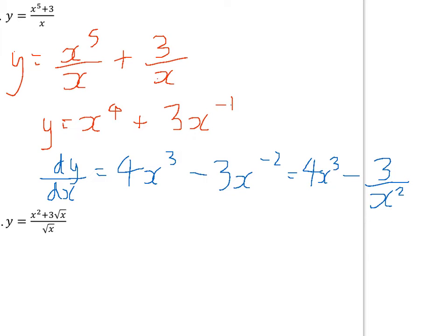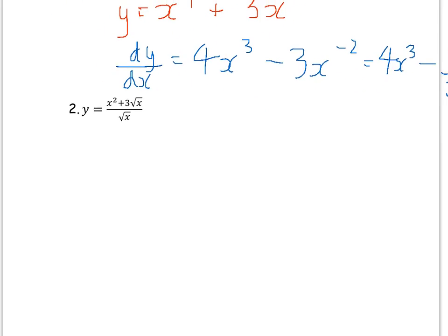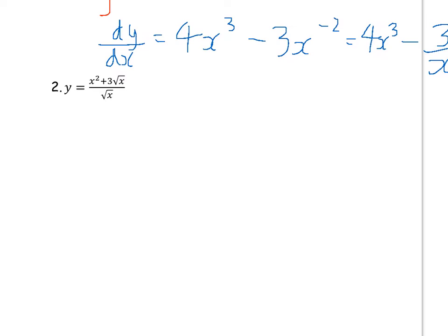The final answer is four x cubed minus three over x squared. Make sure that if you have a negative power, you rewrite it as a fraction.